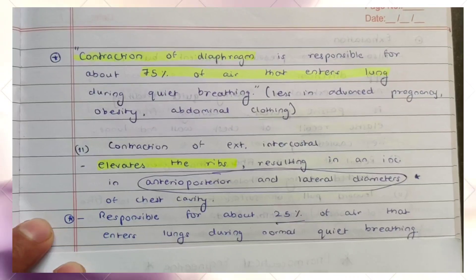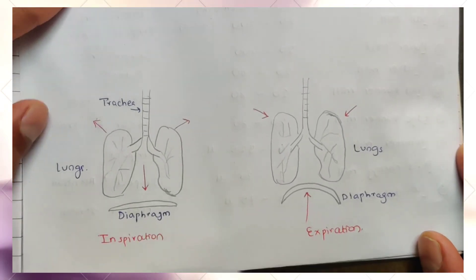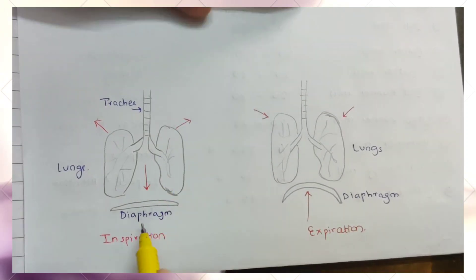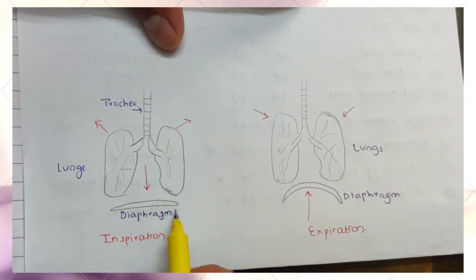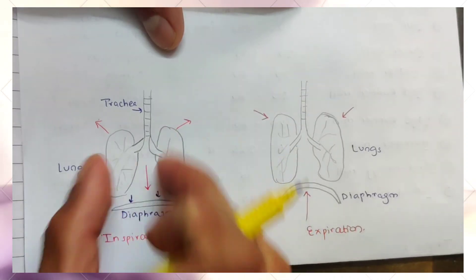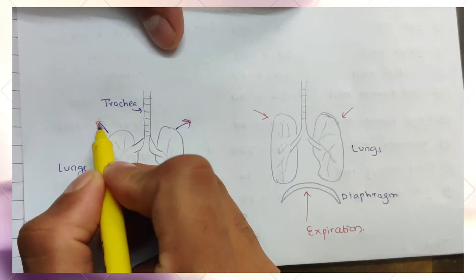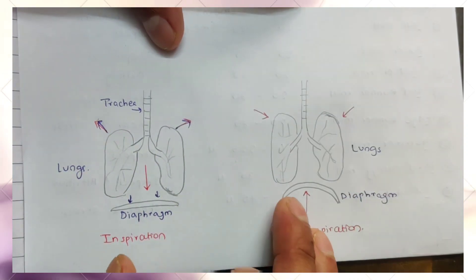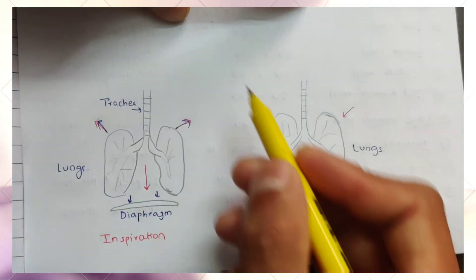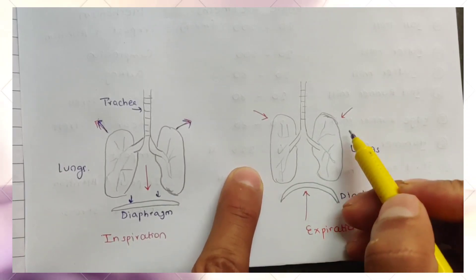Looking at the diagram: when the diaphragm contracts, its dome is lowered and flattened. This causes the vertical diameter of the lungs to increase — that's inspiration, inhalation. You can see the vertical diameter of the thoracic cavity increasing as the diaphragm descends.